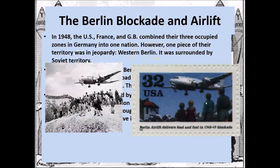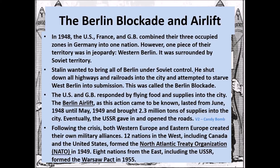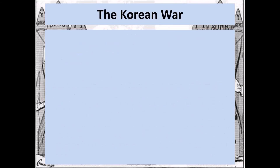Following the Berlin crisis, both western and eastern Europe decided they needed to create military alliances — if it came down to fighting, they needed to have each other's back. Twelve nations in the west, including Canada and the United States, formed the North Atlantic Treaty Organization — NATO — in 1949. Eight nations from the east, including the USSR, formed the Warsaw Pact in 1955. If one country in these organizations is attacked, the rest of the countries have to come to its aid.